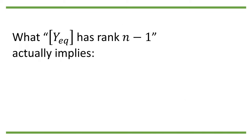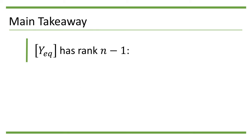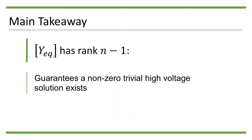So what does it actually mean when the node admittance matrix y eq has rank n minus 1? Since y eq eta equals 0, we will always have a non-zero trivial high voltage solution for the power flow equation. Therefore, the fact that y eq has rank n minus 1 guarantees a non-trivial high voltage solution exists, but it does not imply the necessity of a slack bus.